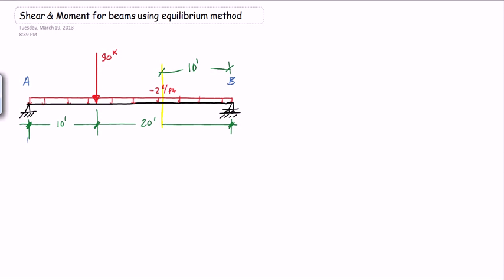The first thing we're going to need, as always, are the reactions, and we already solved for those. The reaction here was 90 kips vertical and 60 kips vertical, and 0 kips horizontal. Let's call this point C — so the point we're looking at is point C. We use the equilibrium method because we're going to use our three equations of equilibrium.